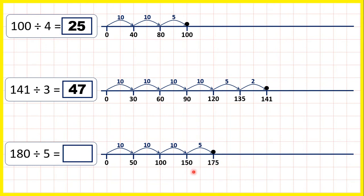So from there, to get to 180, we just need to jump one more. Altogether, we jumped 10, 20, 30—so 3 tens. Then we jumped 5 and 1, making 6. So 180 divided by 5 is 36.